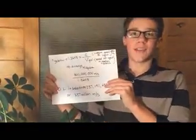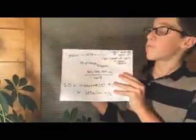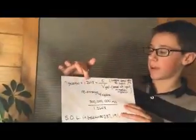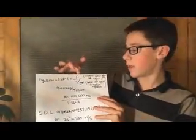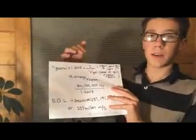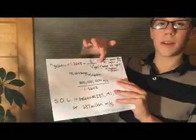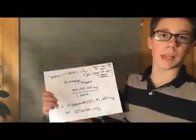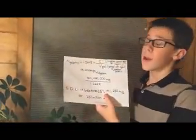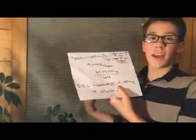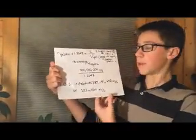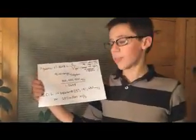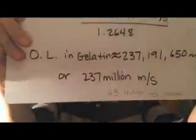There, we can finally figure out the answer, because we know the refraction index. The refraction index equals the constant speed of light divided by the speed of light in our new medium. The speed of light is 300 million meters per second. We divide that by our refraction index, which finally gives us 237 million meters per second — about 63 million meters per second slower than in air. Isn't that awesome?